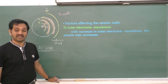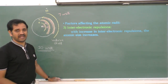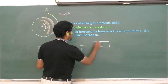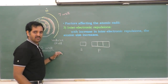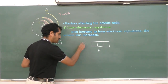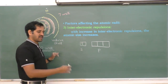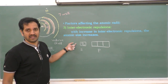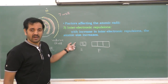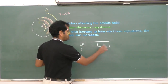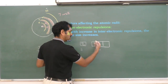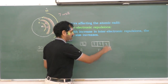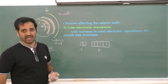Inter-electronic repulsions start only after the pairing of electrons. Initially, electrons fill singly into each orbital before pairing begins — following Hund's rule. Two electrons of opposite spin are then placed in the same orbital, and these electron-electron repulsions within the same orbital create inter-electronic repulsions.